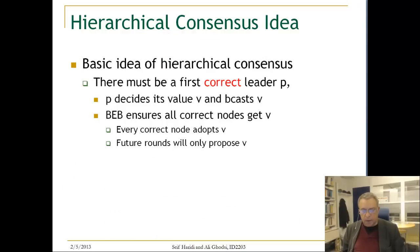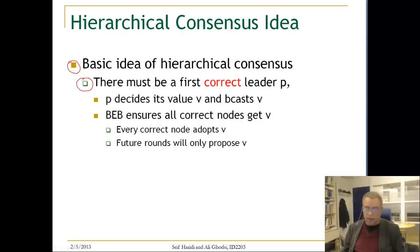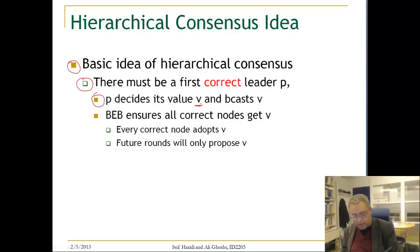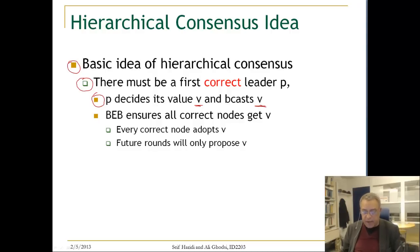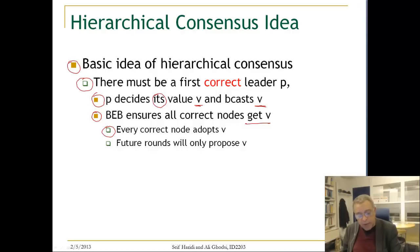The basic idea of hierarchical consensus is the following: there must be a first correct leader — the first node that is correct during the whole session of executing the consensus. That node will decide on its value, whatever it is (it could have adopted it from another node), and it will broadcast this value. Since it is the first correct node it will decide on its value, and it will broadcast using best-effort broadcast to ensure all correct nodes get this value. From that point on, every correct node adopts this value and future rounds will only propose that specific value.